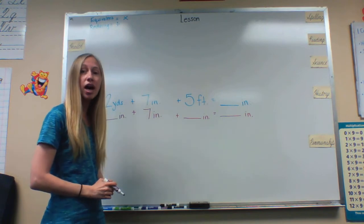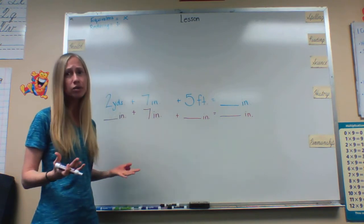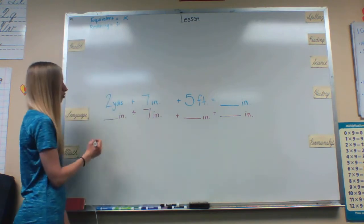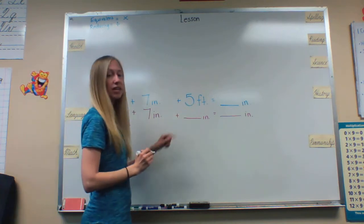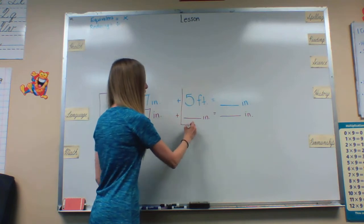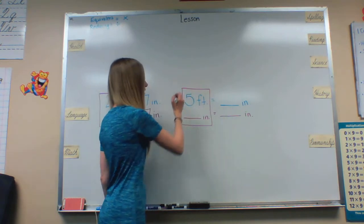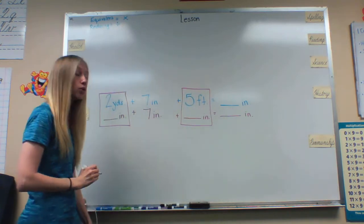Then we need to box the ones that are different, the ones that we need to change. So two yards into inches needs to be boxed and five feet into inches also needs to be boxed. These are what we need to solve for.